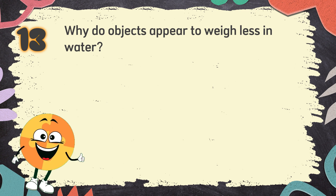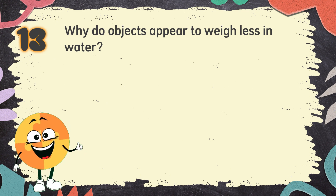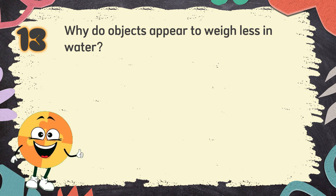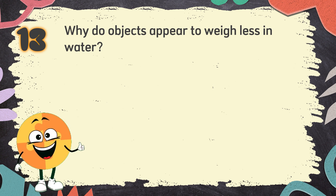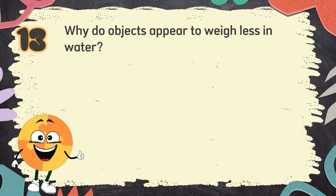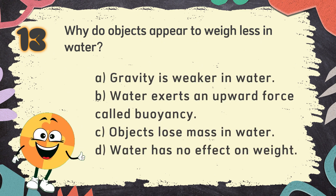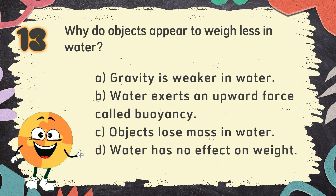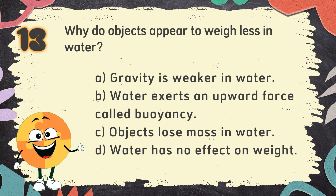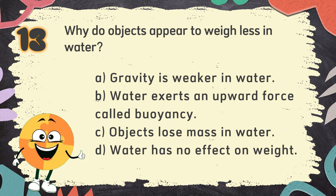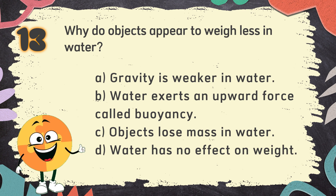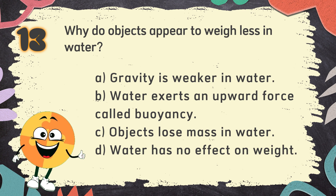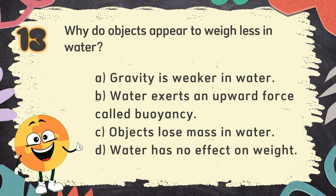Number 13. Why do objects appear to weigh less in water? The choices are: A. Gravity is weaker in water, B. Water exerts an upward force called buoyancy, C. Objects lose mass in water, D. Water has no effect on weight.